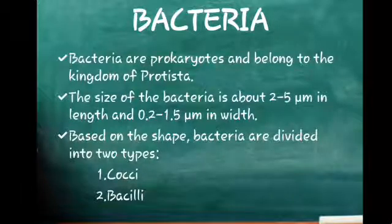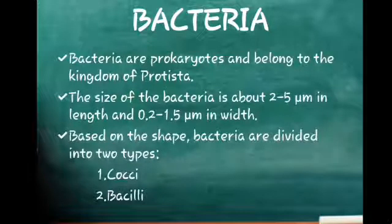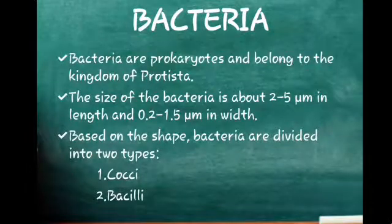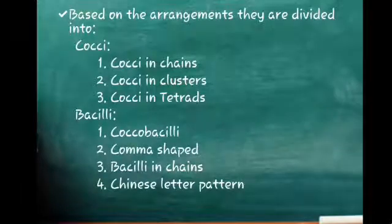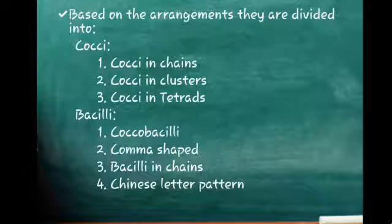Based on the shape, these bacteria are divided into two types: cocci and bacilli. Cocci can be present as cocci in chains, cocci in clusters, or cocci in tetrads. Bacilli can be present as coccobacilli, comma-shaped, bacilli in chains, and as Chinese letter pattern.